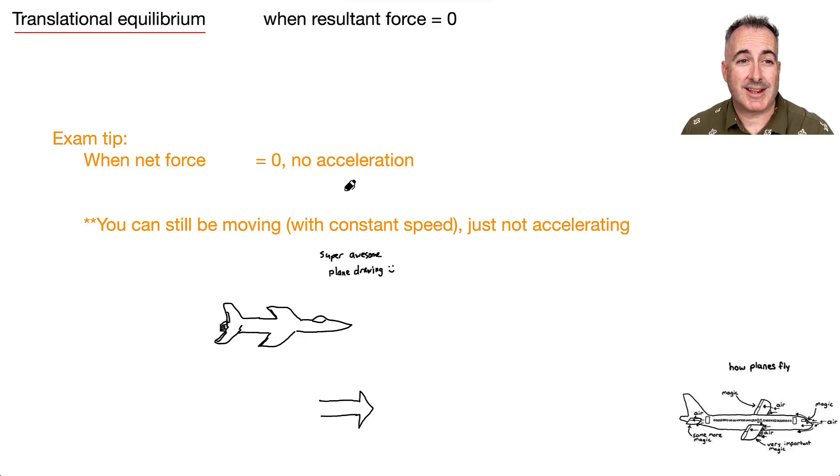We have something we call translational equilibrium. Equilibrium implies the word equal. That's when the resultant force is zero. If you add up all the forces, all the different forces on your free body diagram, if they all cancel out, then you have translational equilibrium. The key thing is this net force. When your net force F_net equals zero, then you have no acceleration. This is really important. It's related to Newton's second law, which says that if you have an unbalanced force, you have acceleration. We're talking here about balanced forces.